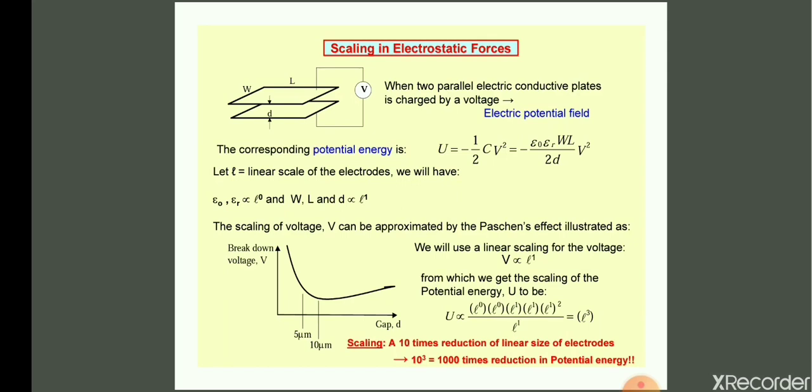The corresponding potential energy is given by U = −(1/2)CV², which equals −(ε₀·εᵣ·W·L)/(2D) × V², where ε₀ and εᵣ are the permittivity, W is the width, L is the length, D is the gap between the two plates, and V is the voltage.